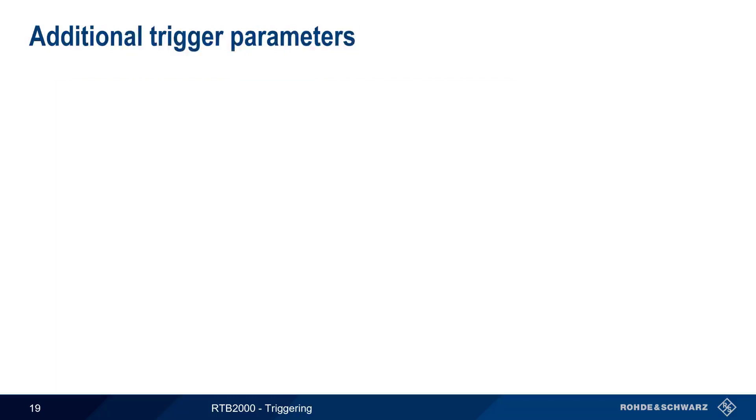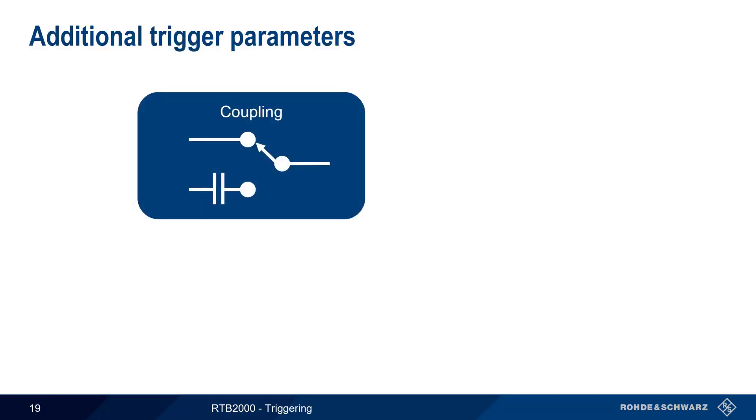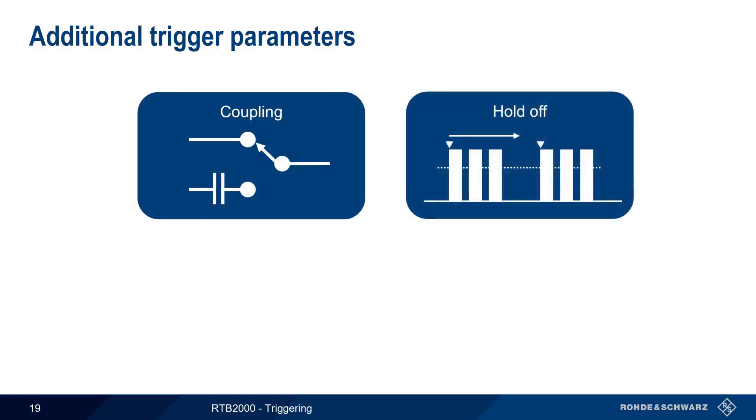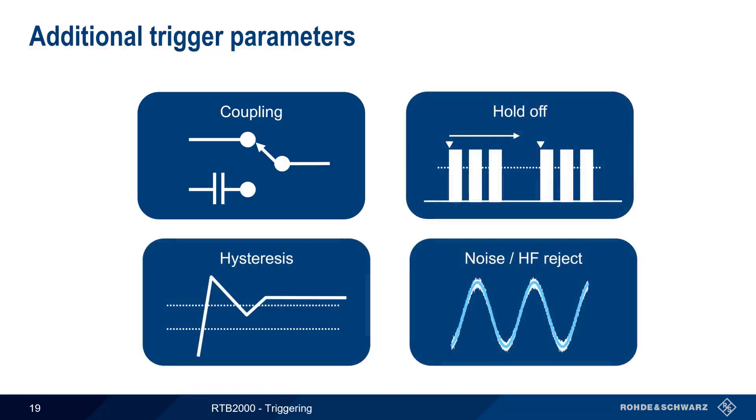Before we finish this presentation, let's take a couple of minutes to go over some additional trigger parameters that can be helpful in certain circumstances. These are trigger coupling, hold-off, hysteresis, and noise or HF rejection.